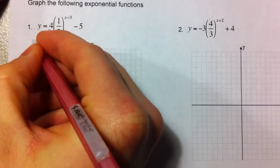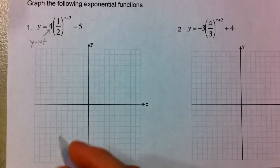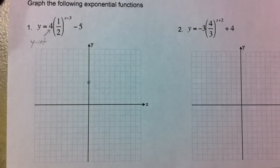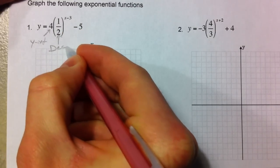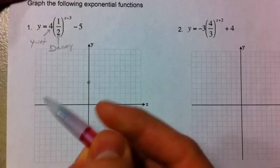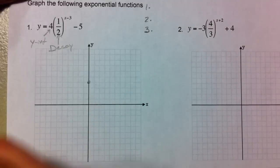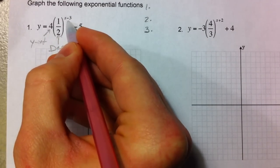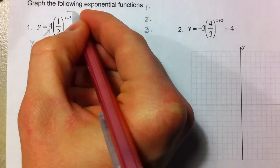Let's look at an example. The four is our y-intercept — that's our starting value before any shift. One-half tells us it's going to be decay. The 'minus three' is with the x, so like we talked about, that affects it left and right, opposite of how we think — so it's going to shift it to the right three.